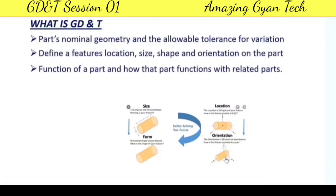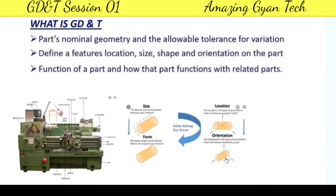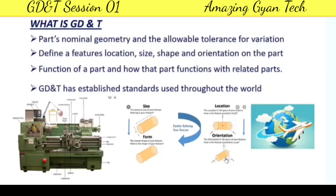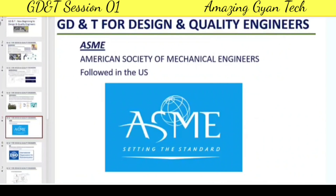A key advantage is that the function of a part and how it functions with related parts is taken into account when using GD&T. Without GD&T, a part is dimensioned only based on its own features. With GD&T, it considers where the part is going to assemble and what its function is, and accordingly determines what tolerances are required. GD&T has established standards used throughout the world, so everyone can follow it easily.